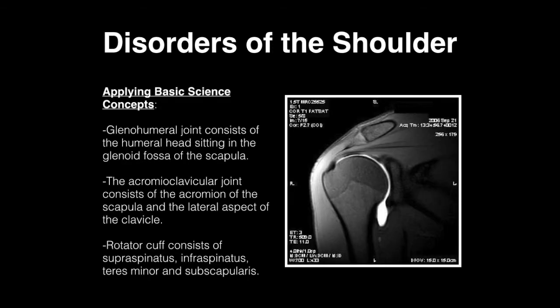The glenohumeral joint consists of the humeral head sitting in the glenoid fossa of the scapula. The acromioclavicular joint consists of the acromion of the scapula and the lateral aspect of the clavicle. The rotator cuff consists of four muscles: supraspinatus, infraspinatus, teres minor, and subscapularis.